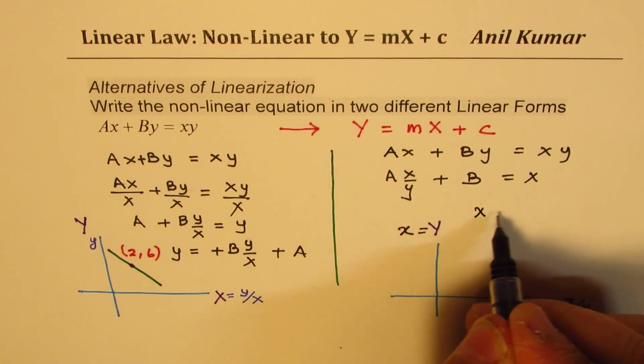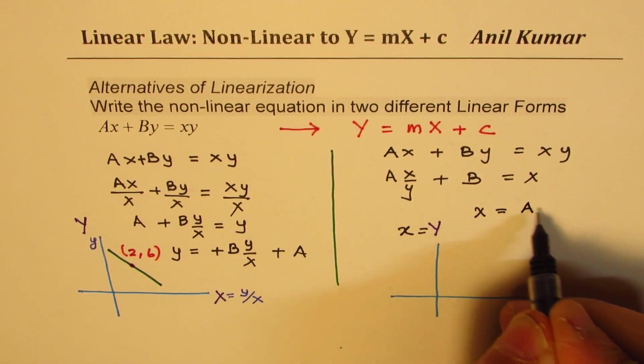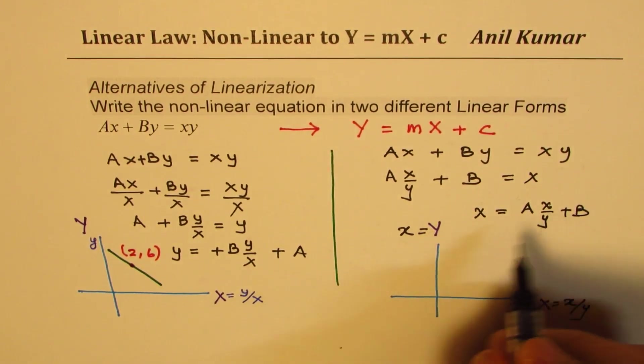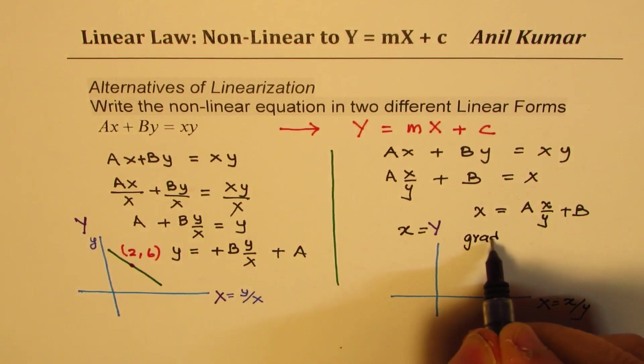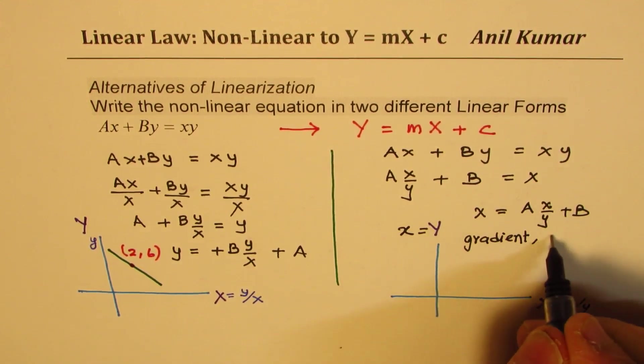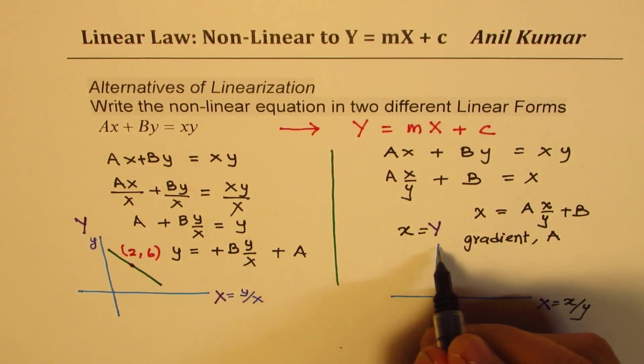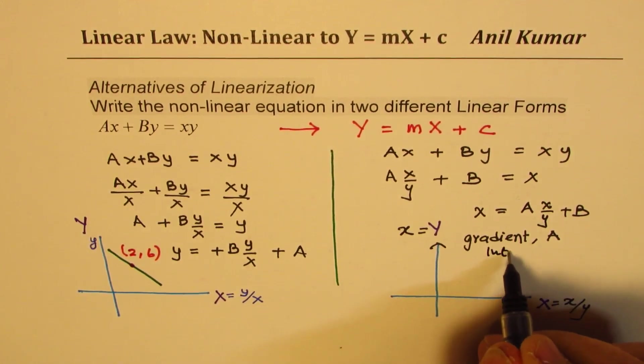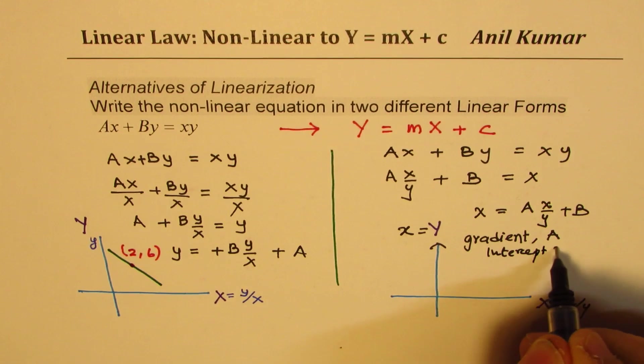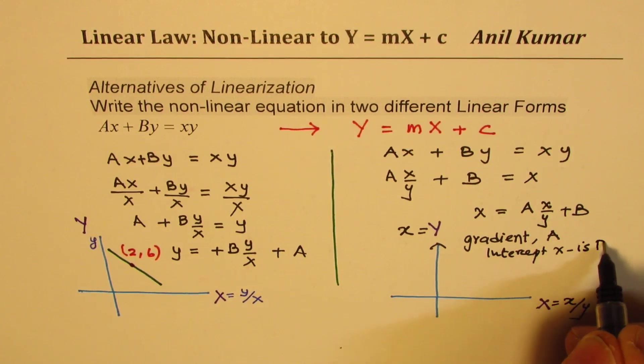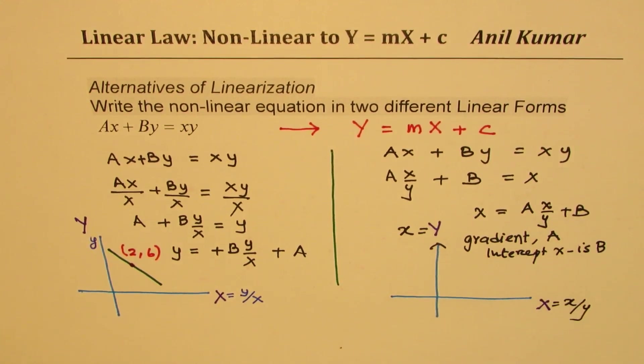So I could rewrite this as X equals AX over Y plus B. In this case you'll see the gradient is what? So in this case gradient is equal to A and the intercept on X axis, this axis, so intercept X is capital B. So that is your capital B. So that is how you could get two different forms of the same equation.